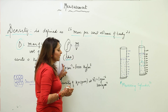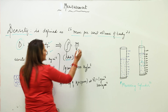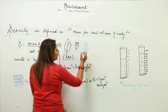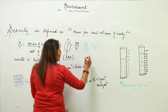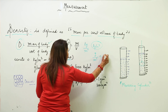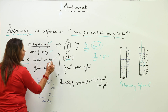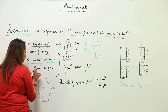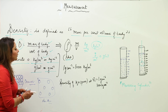Talking about the units: in SI, the unit for mass is kilogram and the unit for volume is meter cube, so density comes out to be kilogram per meter cube (kg/m³). In CGS, mass is in grams and volume is in centimeter cube, so it comes out to be gram per centimeter cube (g/cm³). You can write these in either notation.